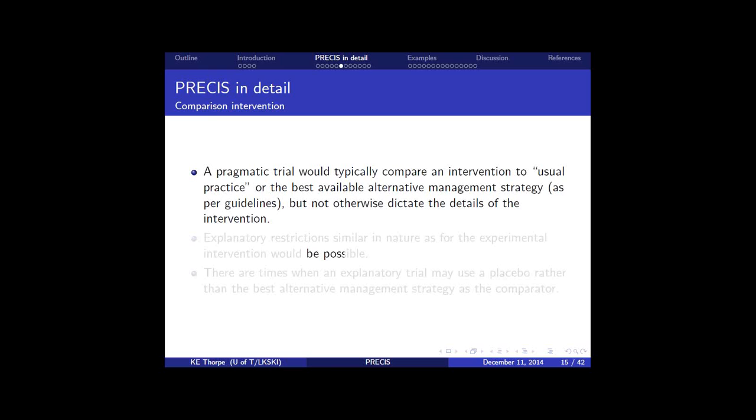You can do restrictions in a similar manner to the experimental intervention. One other thing to note, there are times when an explanatory trial may use a placebo rather than the best alternative management strategy to compare it. And so it would probably not be particularly pragmatic to introduce a placebo when it comes to a pill. If they weren't getting that before, you introduce that now, it becomes a little bit less pragmatic. It's not unheard of, but it's not going to be at the most pragmatic end.